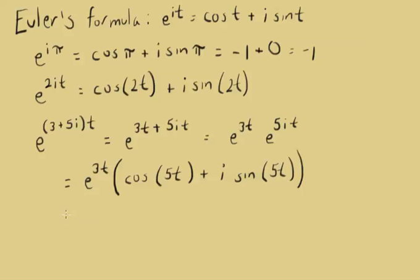So, if we want to think about that, if you want, we can distribute here. We're going to have e to the 3t cosine of 5t plus i e to the 3t times the sine of 5t.